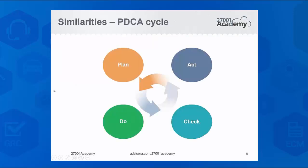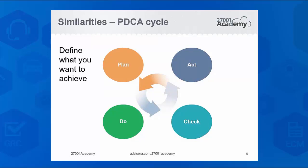First, what are the similarities between ISO 9001 and ISO 27001? Both standards are based on the PDCA cycle — Plan, Do, Check, and Act. In the Plan phase, you define what you want to achieve. For quality management, you define top-level objectives and quality policy. Information security also defines top-level objectives and an information security policy. You also perform risk management, which is a crucial part of ISO 27001. There is some risk management in ISO 9001, but it doesn't have nearly the same significance as it does in 27001.